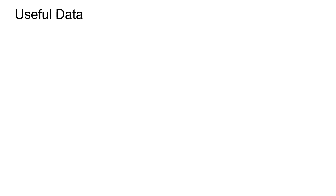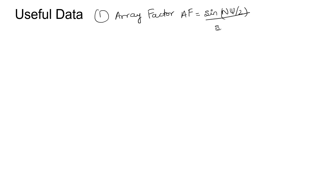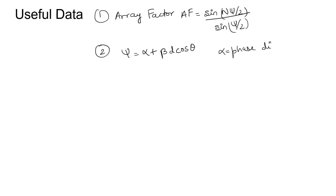The first thing we need to keep in mind for solving this question is the array factor. The array factor AF is equal to sin(Nψ/2) divided by sin(ψ/2). Here ψ is defined as α + βd·cosθ, where α is the phase difference between the two array elements.